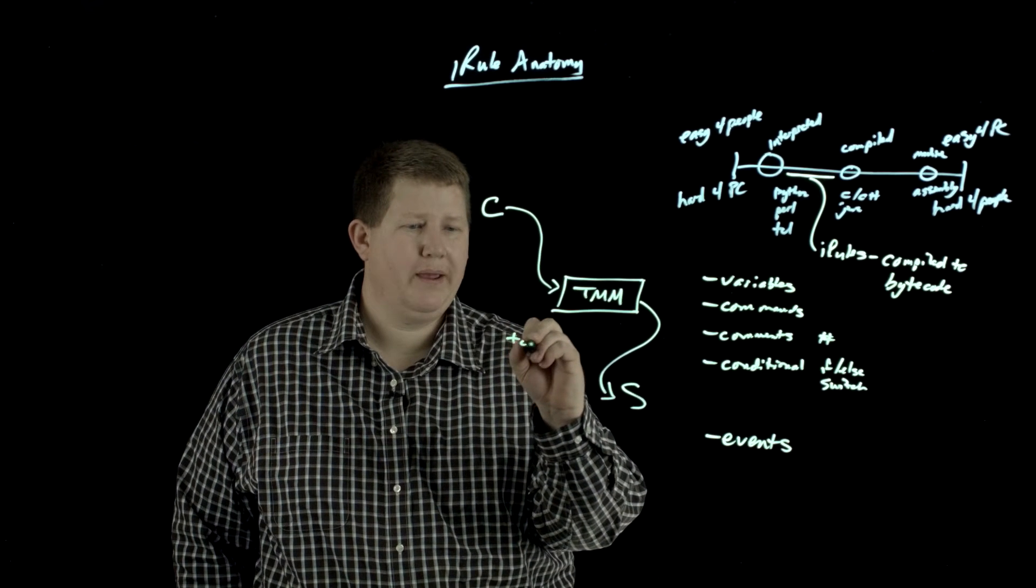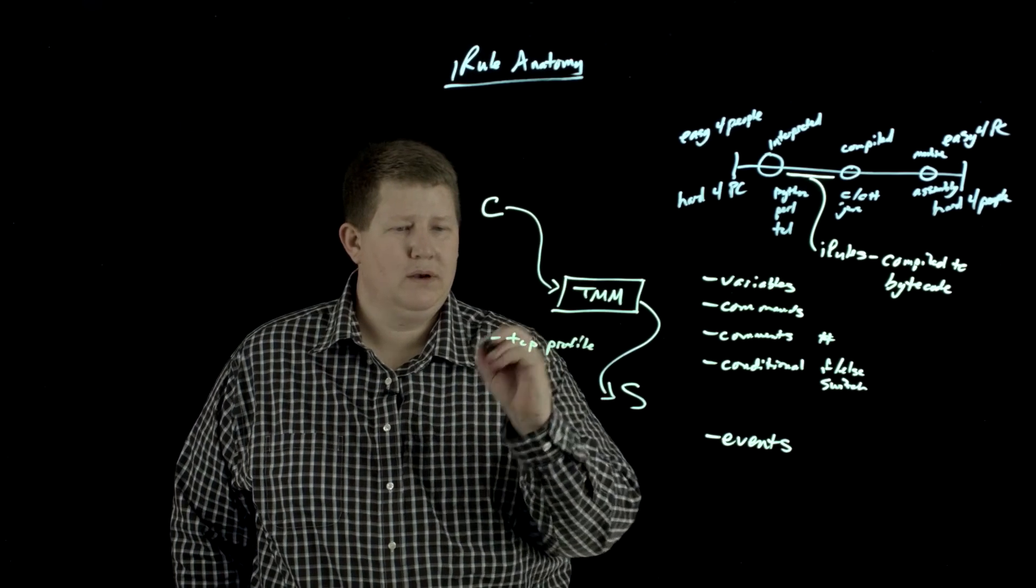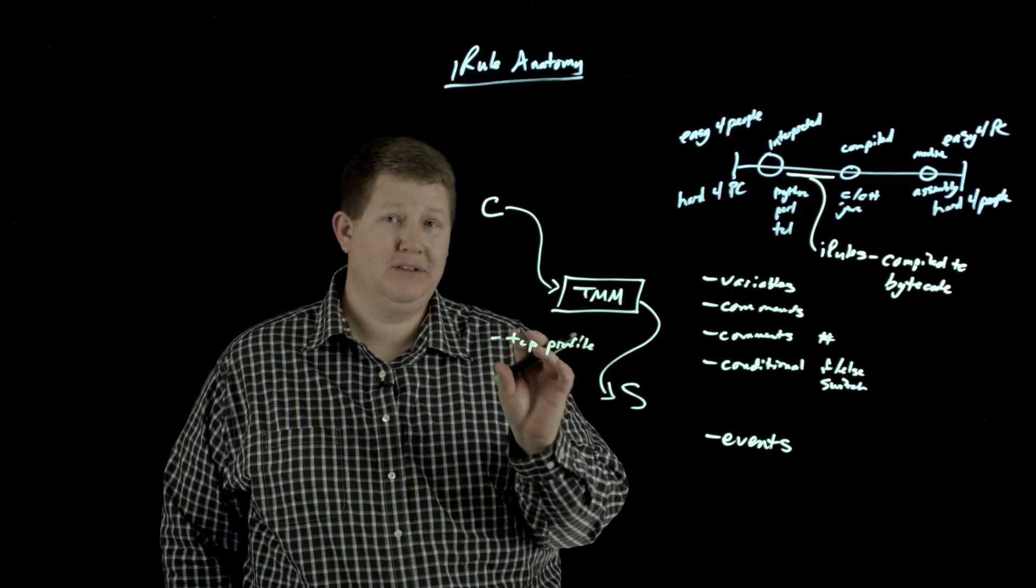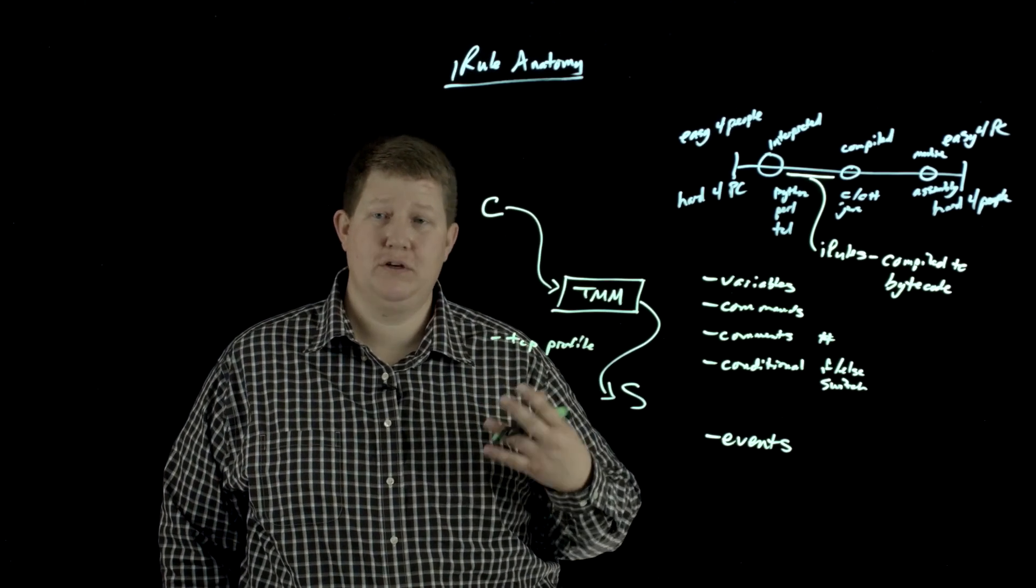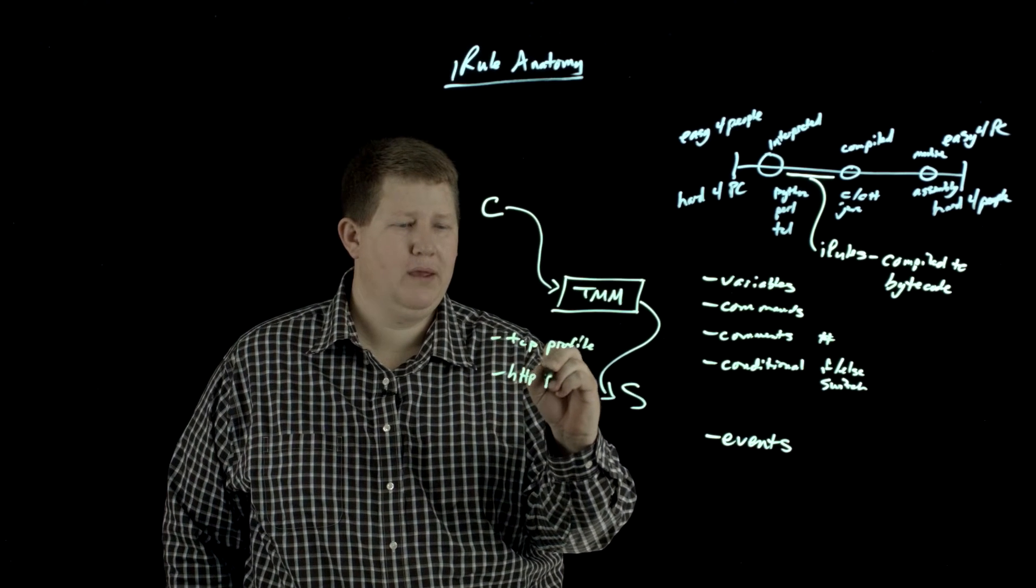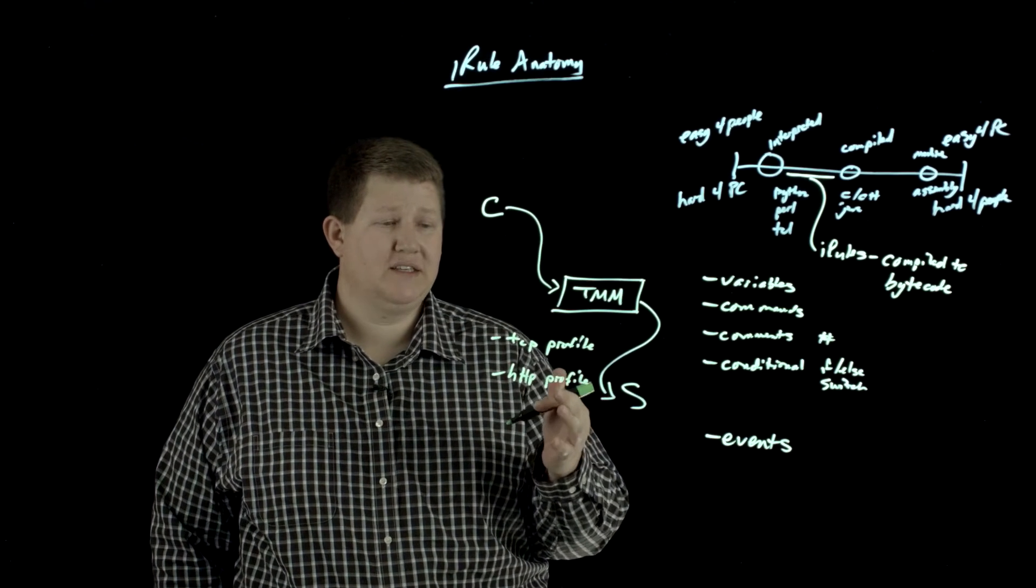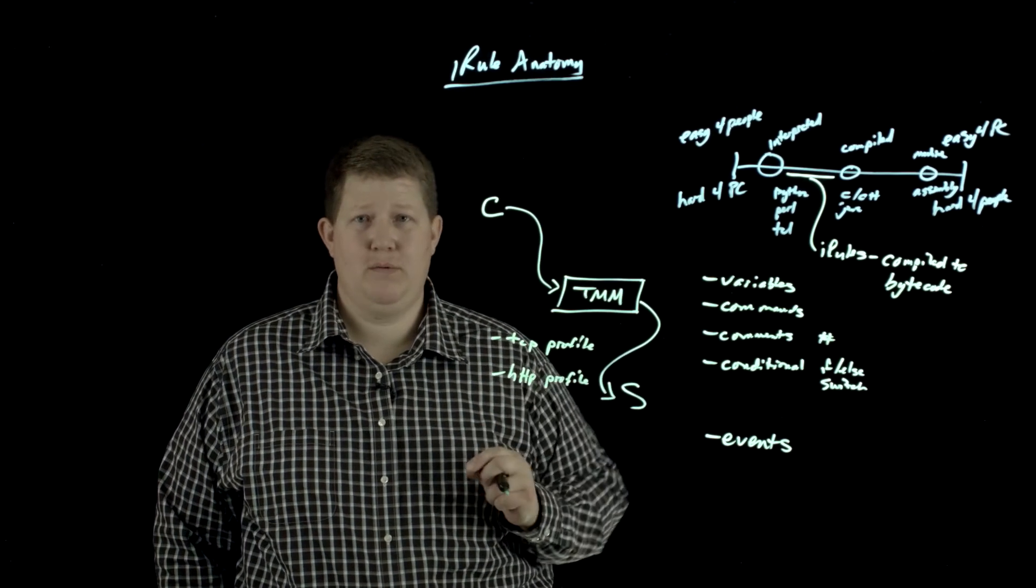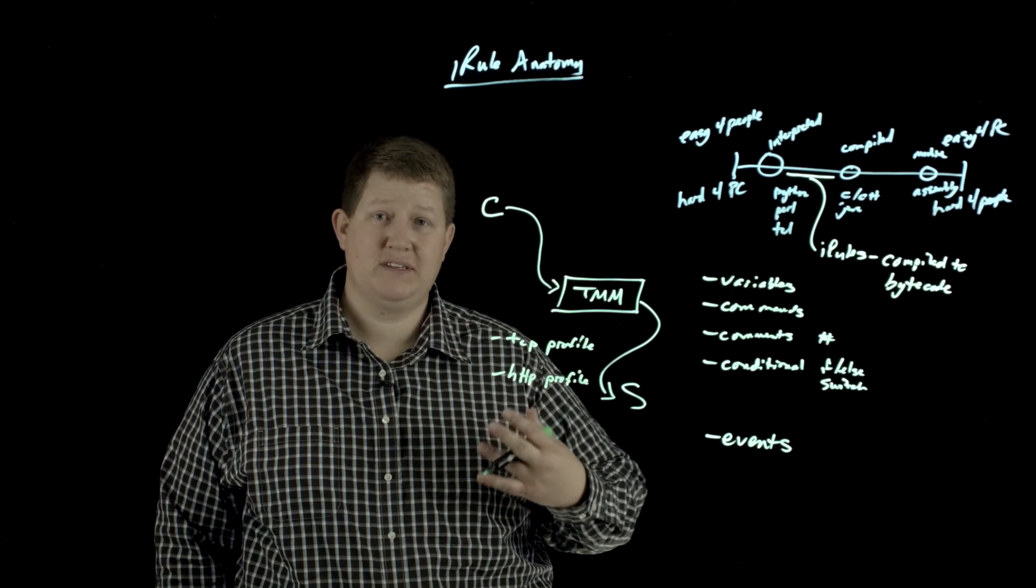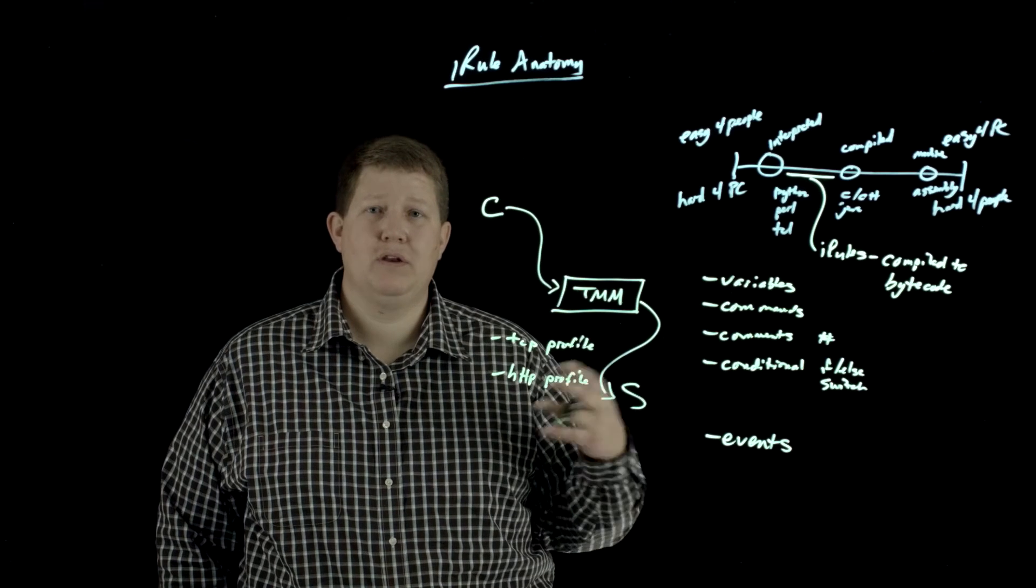If you apply a TCP profile, now there's going to be certain attributes about TCP available to you to do something with. And the same is true if you apply an HTTP profile. Now in the context of iRules, if you don't have HTTP profile applied, you can still get to that data if you have TCP applied.